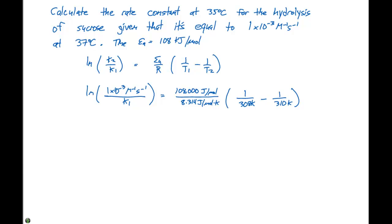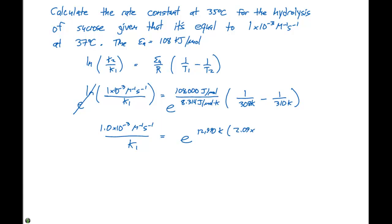To eliminate the natural log, we raise e to both sides of the equation. This simplifies things: 108,000 divided by 8.314 gives 12,990 (in Kelvin), and one over 308 minus one over 310 equals 2.09 times 10 to the minus five Kelvin to the minus one. The Kelvin units cancel, leaving the exponent dimensionless.